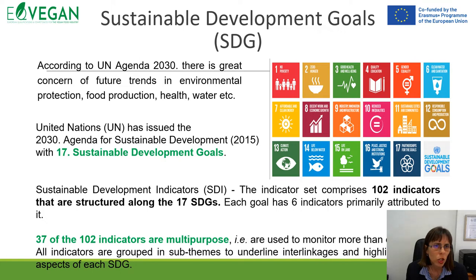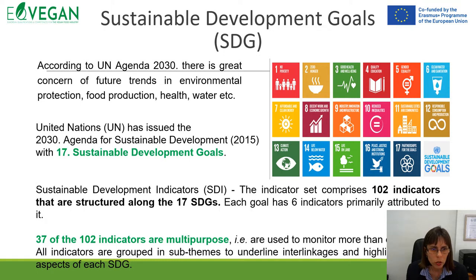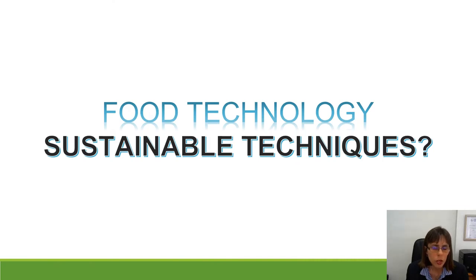According to the UN agenda, there is great concern for future needs in environmental protection, food production, health, water, and other areas. The 2030 Agenda for Sustainable Development contains 17 Sustainable Development Goals. Sustainable development indicators are structured along these 17 SDGs, and 37 of the 102 indicators are multi-purpose — used to monitor more than one SDG. Regarding food technologies and sustainability in vegan food processing, we need to think about food technology and sustainable techniques.